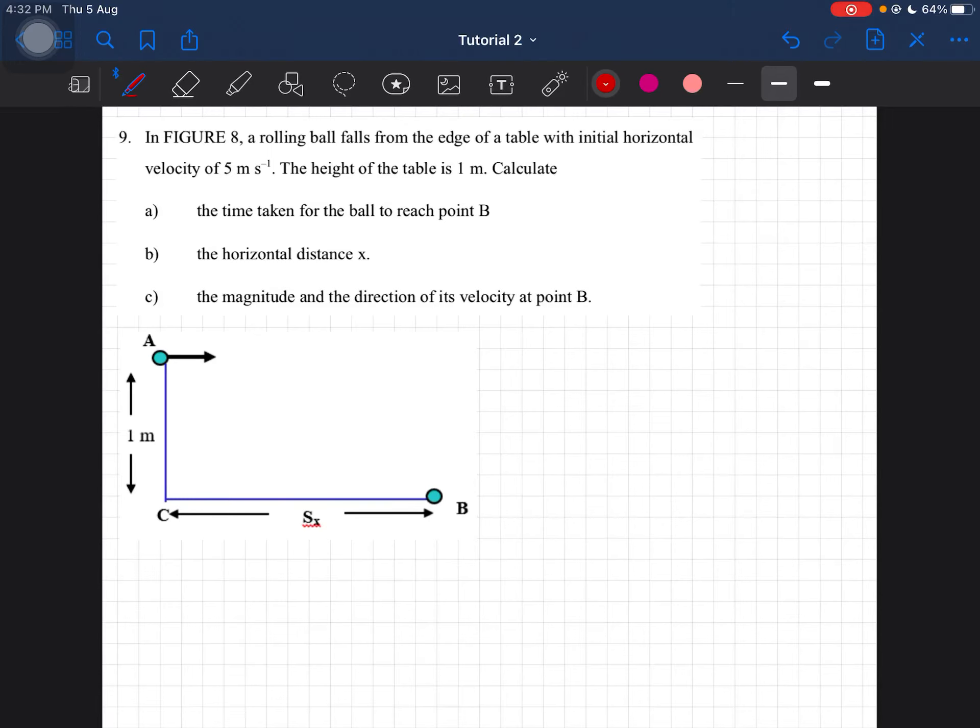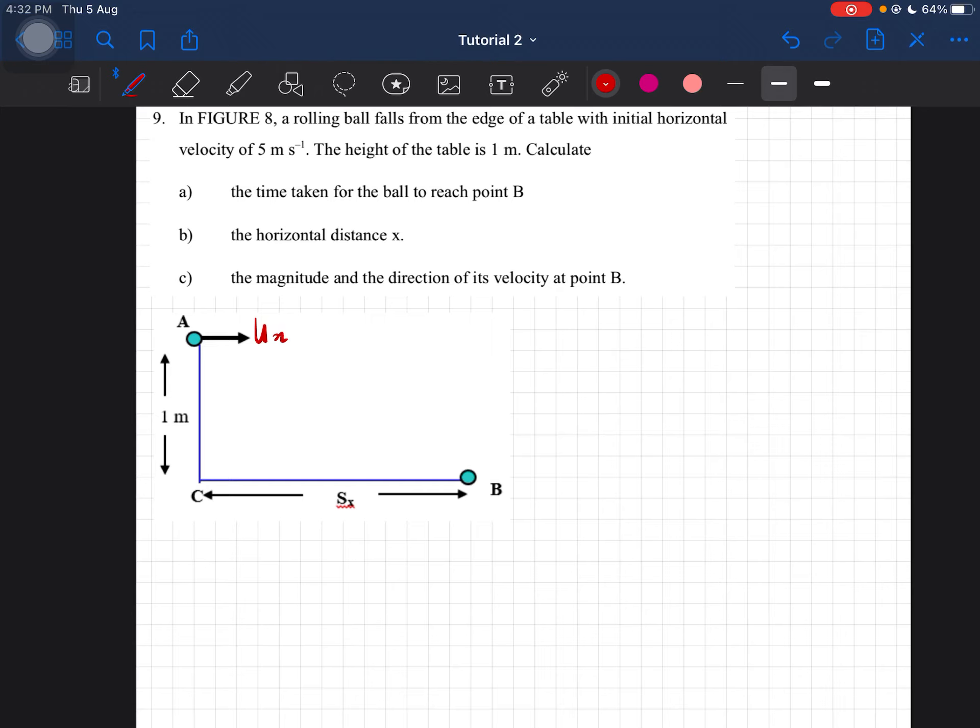Alright, our second to last question. In Figure 8, which is this figure, a rolling ball falls from the edge of a table with initial horizontal velocity of 5 meters per second. So we have the initial horizontal velocity which is 5 meters per second. The height of the table is 1 meter. Again, the ball is falling down.